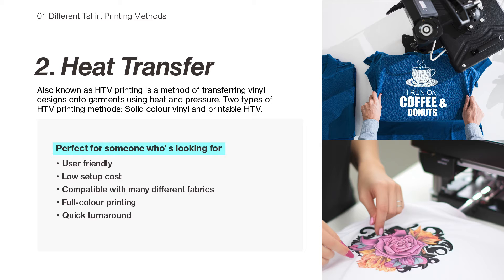HTV printing has low setup cost compared to screen printing — you don't need expensive screens or specialised inks, making it a cost effective option for small-scale production or one-off projects. It is compatible with many different fabrics including cotton, polyester, spandex, leather, and canvas. With printable HTV, you can achieve full colour designs with gradients and intricate details, offering more creative possibilities. HTV printing also offers a relatively fast turnaround time — once the design is ready and materials prepared, the application process is quick, especially for smaller sizes.